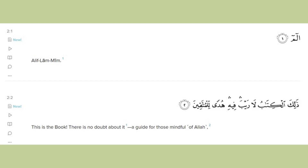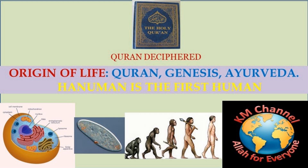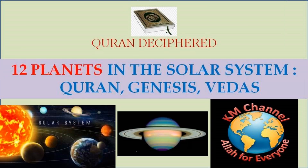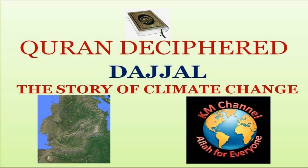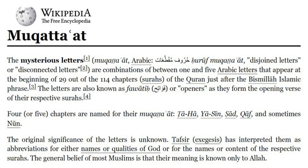I have shown in previous presentations that the Quran contains scientific knowledge. Based on this, we can understand the details of these chapters after deciphering. Based on the details mentioned in these chapters, we can understand the meaning of these broken letters. With this information, let us now start decoding them.